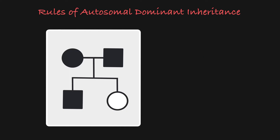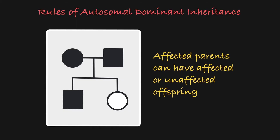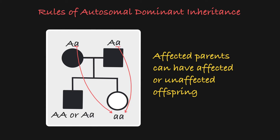Let's take a look at some pedigrees to learn the rules of autosomal dominant inheritance. When you have one or two affected parents, you can have either affected or unaffected children. That is a result of the fact that the parents can be either heterozygous or homozygous dominant, which means they can pass on either the dominant or the recessive allele, and they could have children of any genotype.